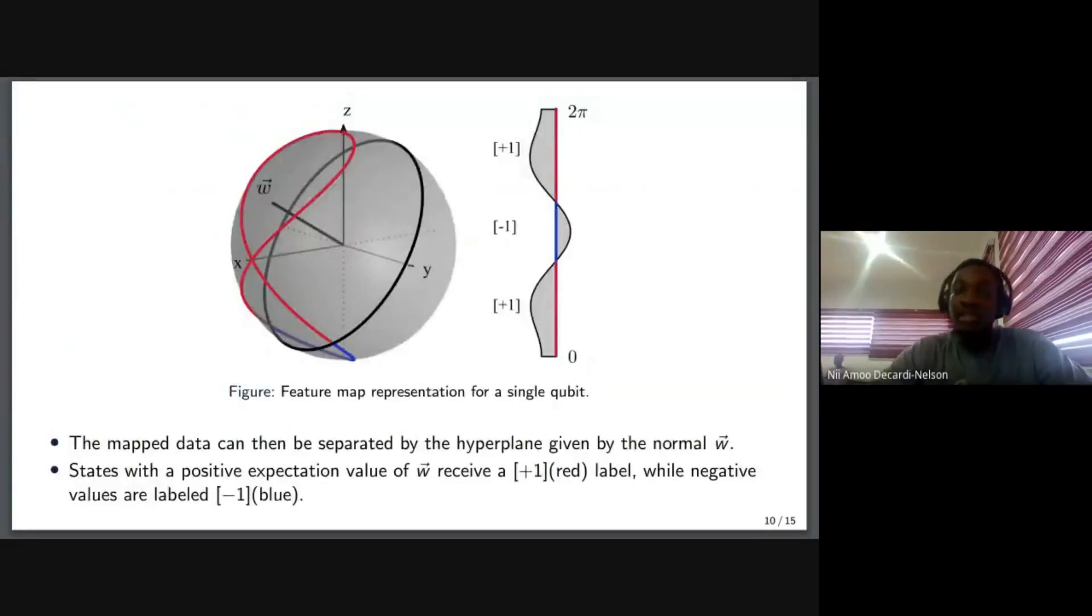Now, once we translate data into the quantum variation or the quantum analog using the feature map, we'll be able to represent it on the Bloch sphere. The Bloch sphere is just what we use to represent qubits on the Hilbert space. So the position of a qubit on this Bloch sphere would indicate the value. Now once we are able to do this translation, we are able to calculate the normal vector to this data set, and that would form the hyperplane that would be used to classify the data points.